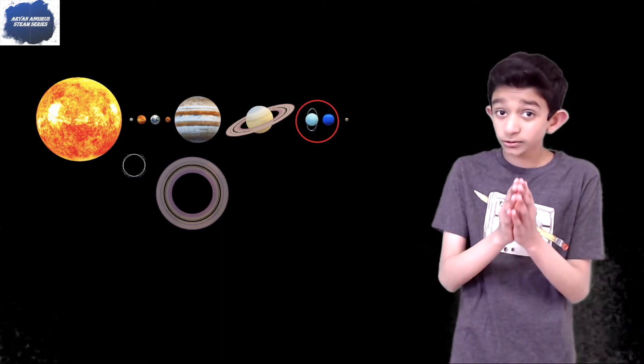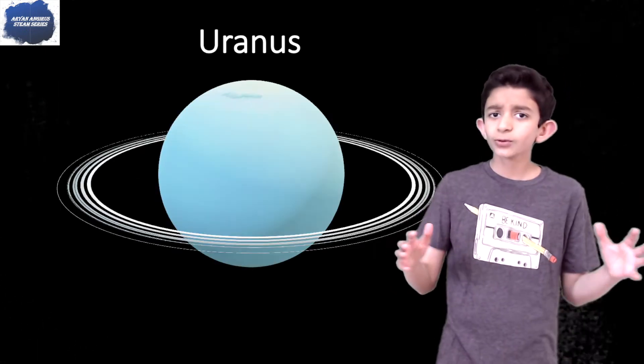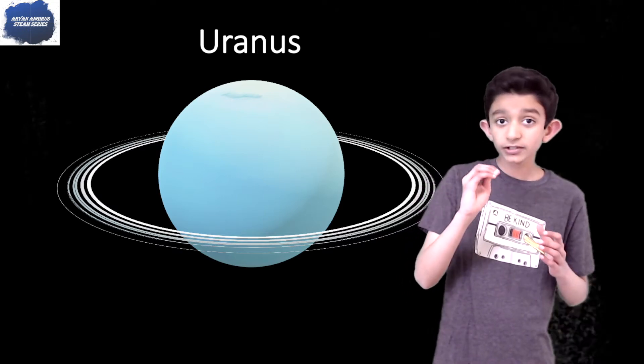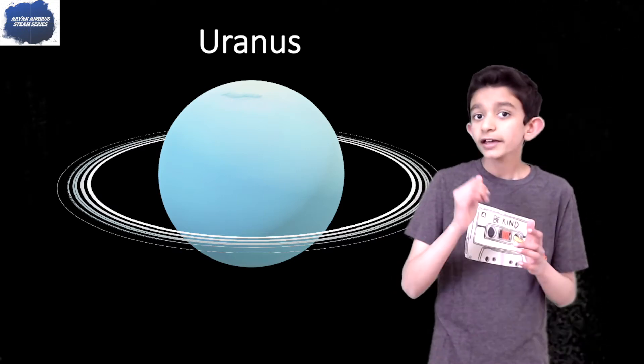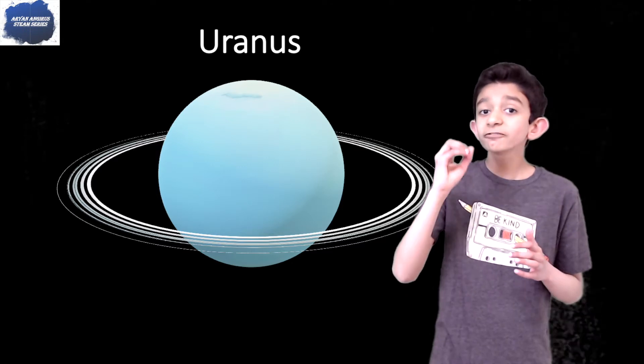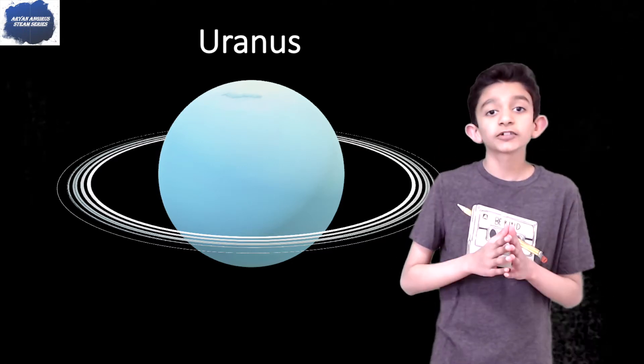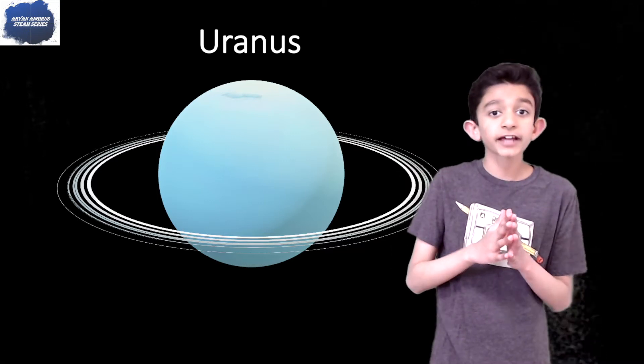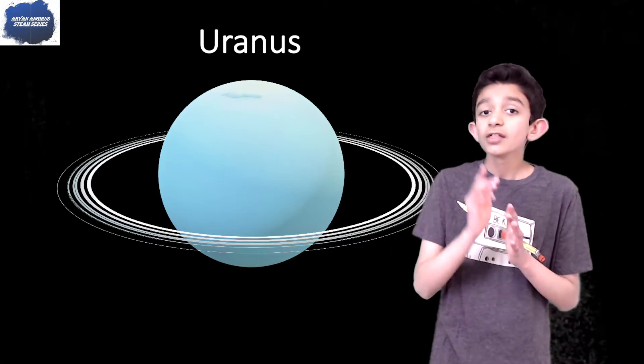Do you guys wonder why Uranus is blue? It's because it contains a special gas called methane, and also ammonium fluids. And let's not forget water and hydrogen. Let's not forget helium.